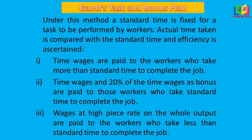In that case, time wages are paid to the workers. If the efficiency is 100%, that is actual time equals the standard time, it is treated as 100% efficiency — in that case time wages plus 20% bonus will be paid. In the third category, if the efficiency is more than 100%, that is if the actual time is less than the standard time, it is treated as more than 100% efficiency.